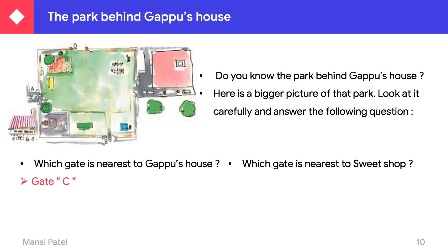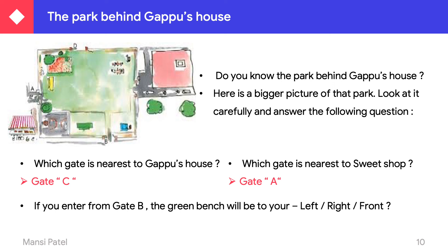In the opposite direction of Gappu's house, there is a sweet shop. Which gate is nearer to the sweet shop? We can say gate A. If you enter from gate B — gate B is in the South direction — the green bench will be to your left, right, or front side? We can say that the green bench will be on your left side.